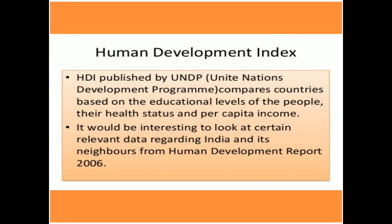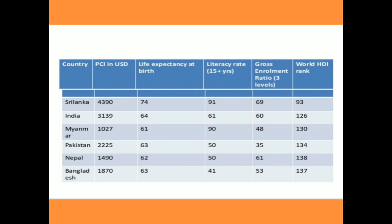The Human Development Index (HDI), published by the United Nations Development Programme, compares countries based on educational level, health status, and per capita income. To assess a country's development, we look at income level as well as health and education status. Looking at relevant data from the Human Development Report of 2006, neighboring countries include Sri Lanka, India, Myanmar, Pakistan, Nepal, and Bangladesh, compared on per capita income in US dollars, life expectancy, literacy rate, gross enrollment, and HDI ranking.